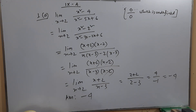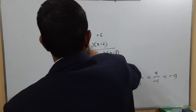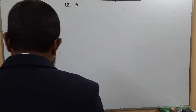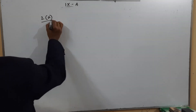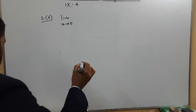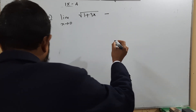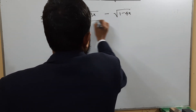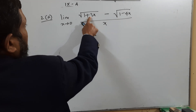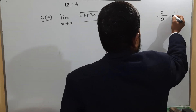Now I will solve problem 2a: limit x tends to 0 of (√(1 + 3x) − (1 − 4x)) / x. If we put x equal to 0, we get (1 − 1) / 0 = 0/0, which is undefined.